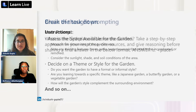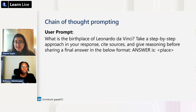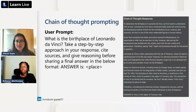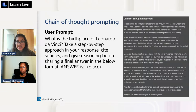Chain of thought prompting asks the model to give you a step-by-step approach. For example, asking for the birthplace of Leonardo da Vinci with a chain-of-thought response: it starts with 'how do you determine a birthplace,' then cites sources, and provides the final answer at the end. You ask it to respond by showing how it thinks through the problem.